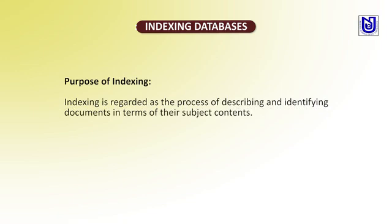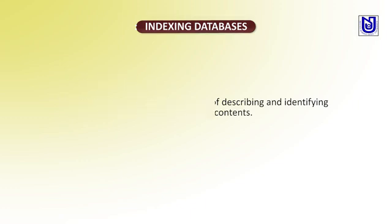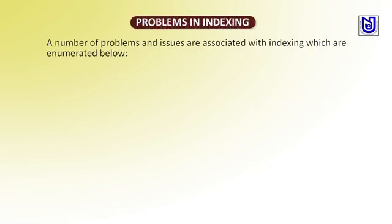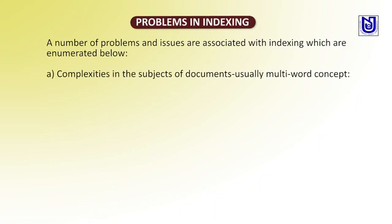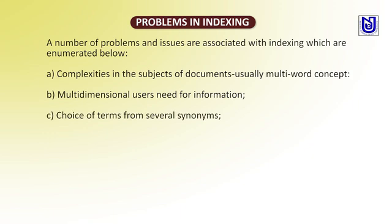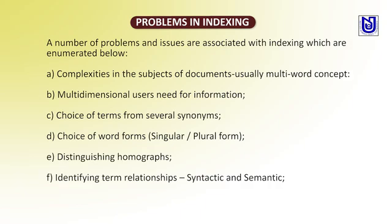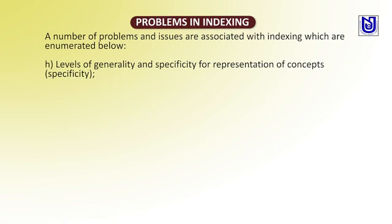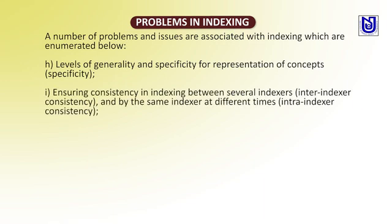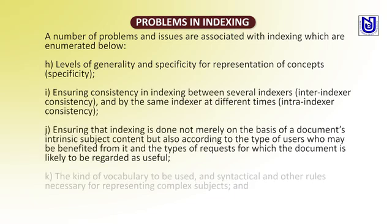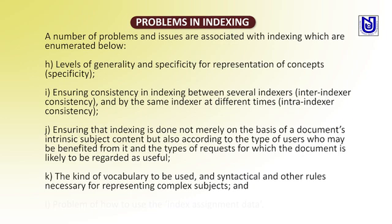The purpose of indexing is regarded as a process of describing and identifying documents in terms of their subject contents. A number of prominent problems or issues are associated with indexing, including: the complexity of subject of documents, usually involving multi-word concepts; multi-dimensional user needs for information; choice of terms from several synonyms; choice of words from singular and plural forms; distinguishing homographs; identifying term relationships — syntactic and semantic; depth of indexing; levels of general to specific representation; ensuring consistency in indexing terms; the kind of vocabulary to be used; and other systematic rules necessary for representation.